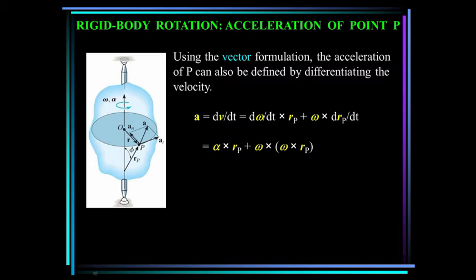And then rigid body rotation about a fixed axis. The tangential component of the acceleration is equal to alpha cross r, and the normal component is omega cross r. And be sure you do this cross product first. If you do omega cross omega first, those are both in the k-direction, so that comes out to be equal to zero.